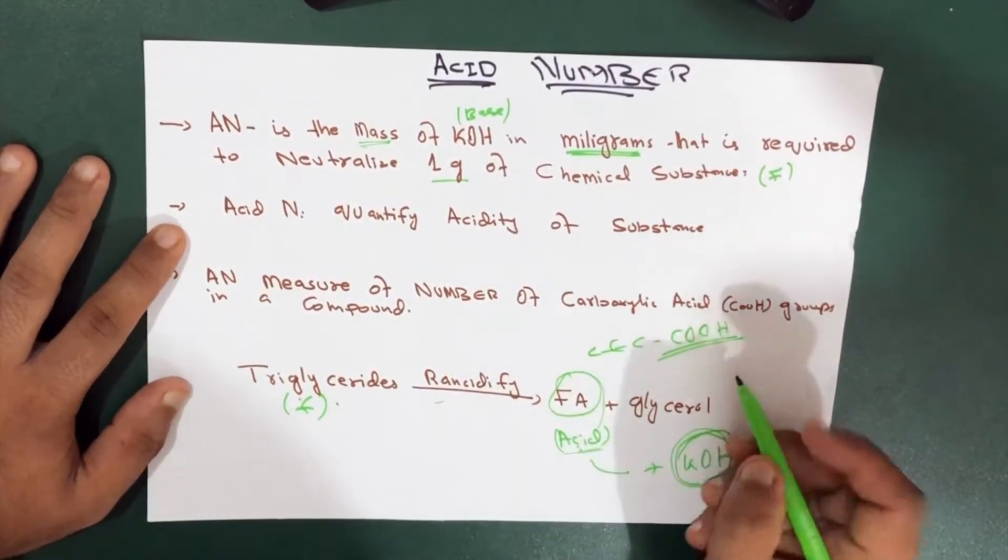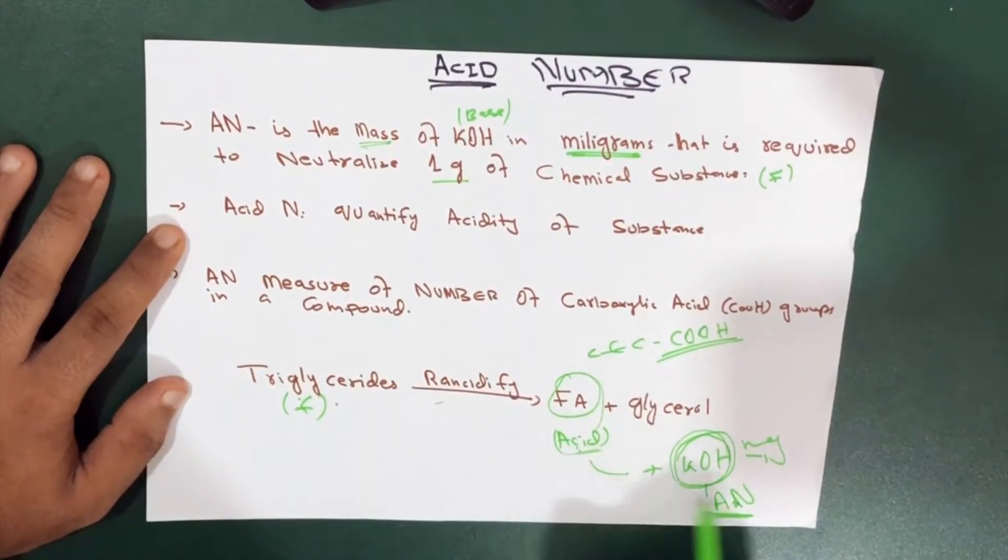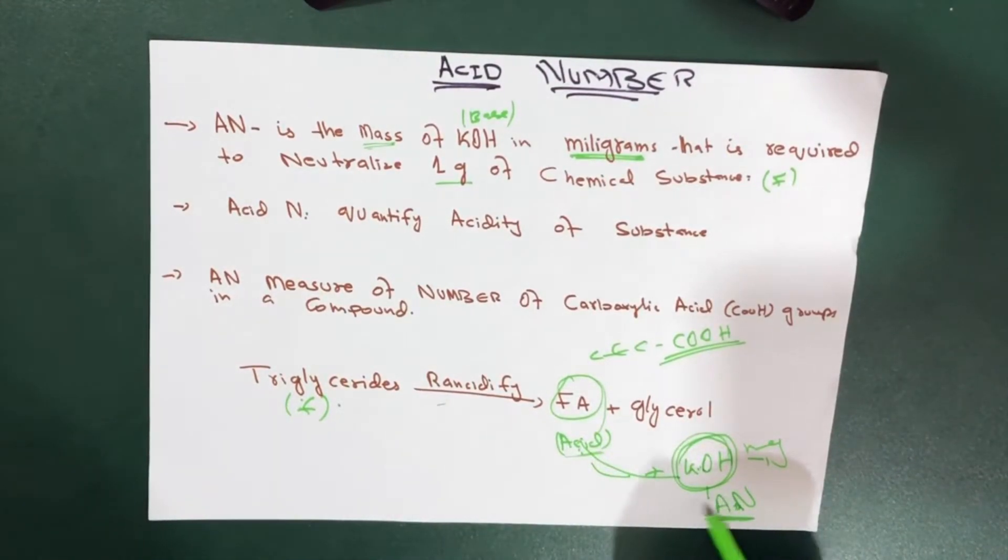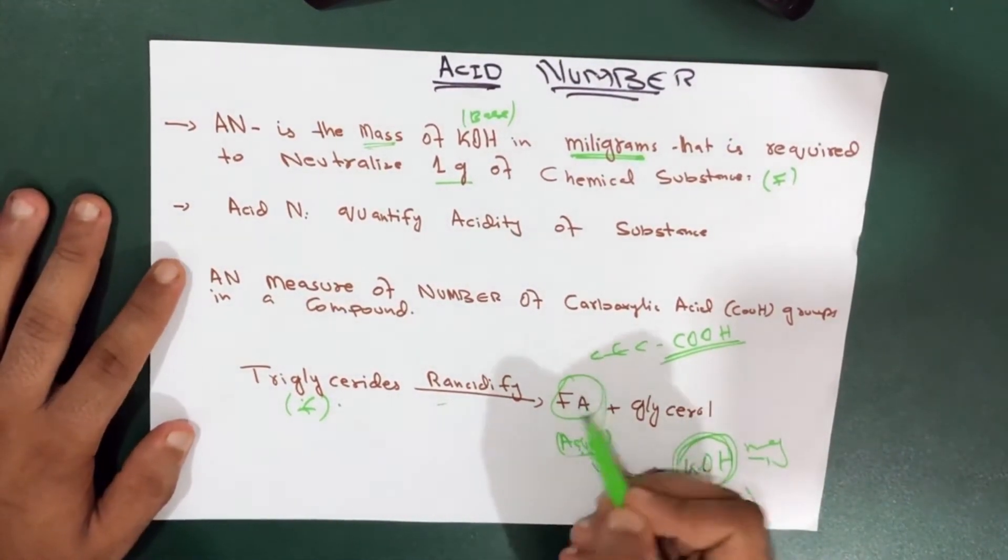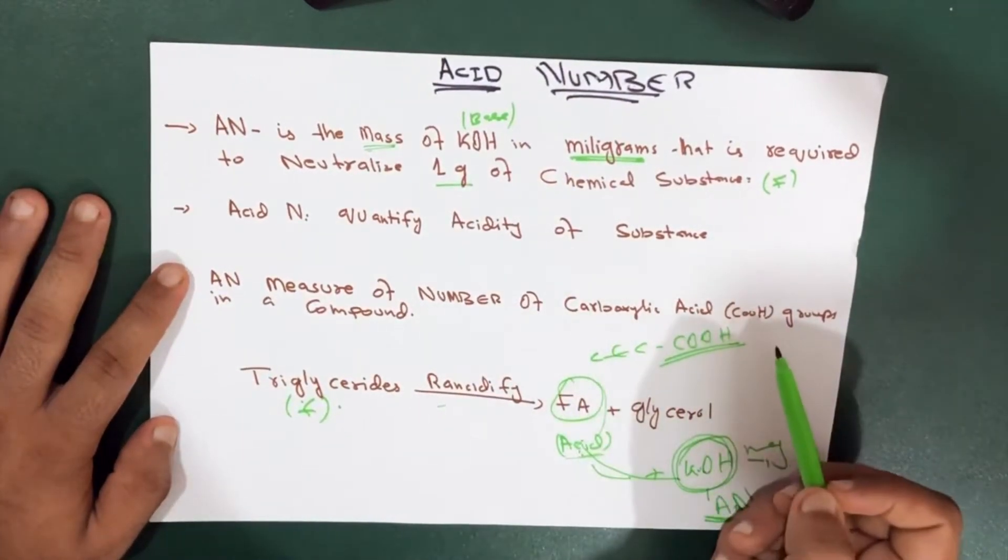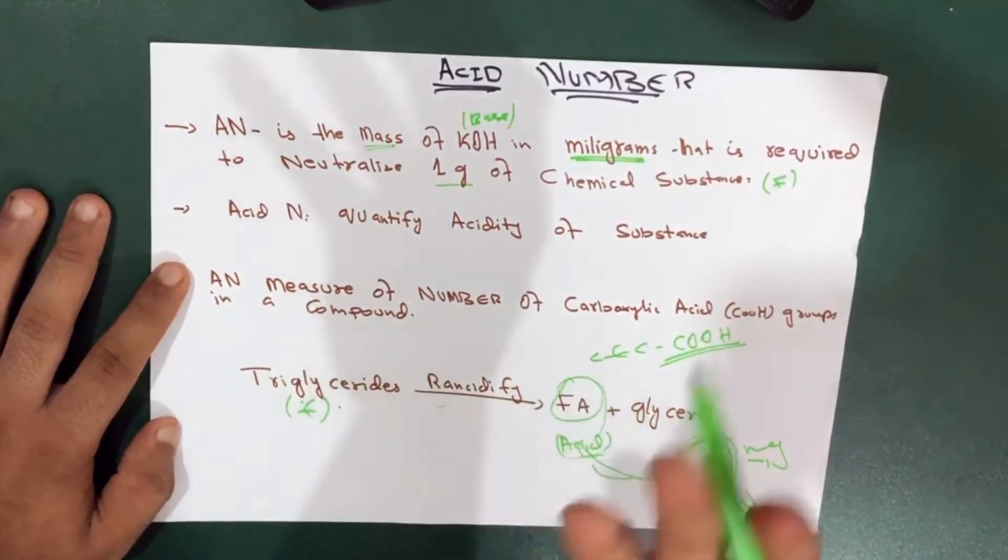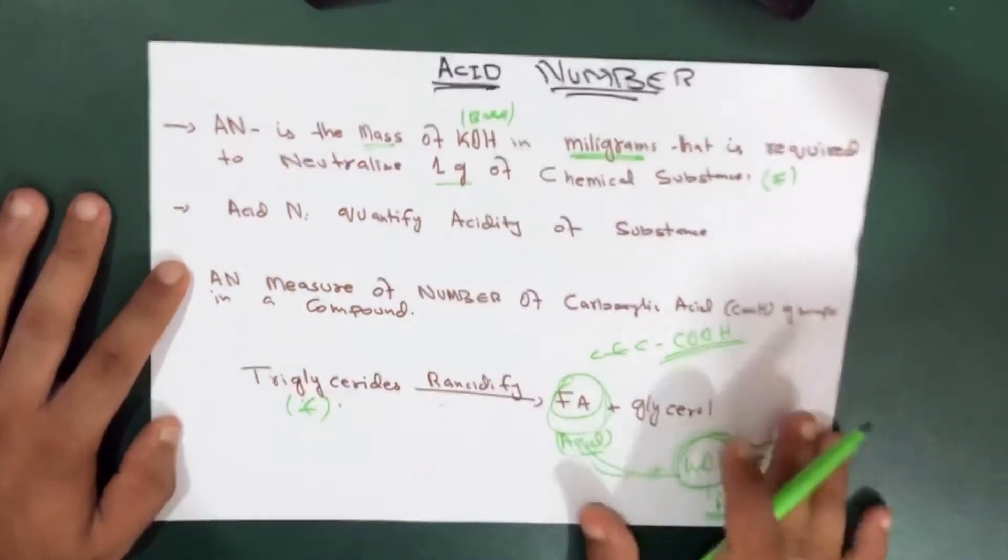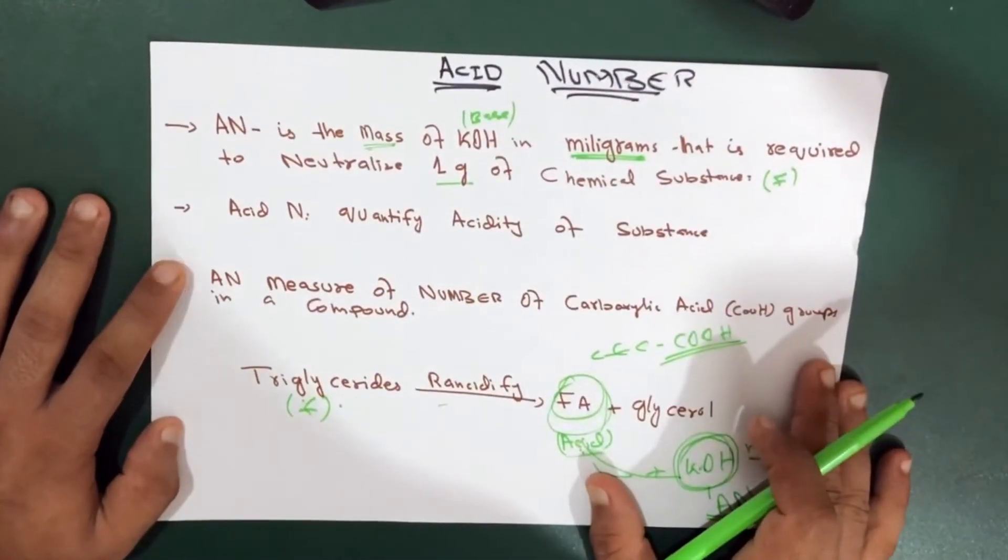So the acid number which reacts with the potassium hydroxide will indicate to us how many carboxylic groups are present. So acid number measures the number of carboxylic acid, which is this one, the fatty acid groups in a compound. So this is very easy to understand.